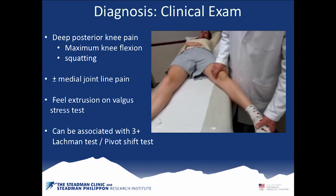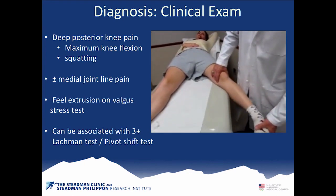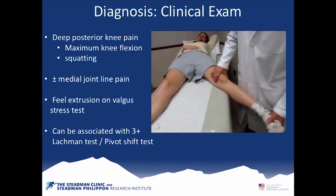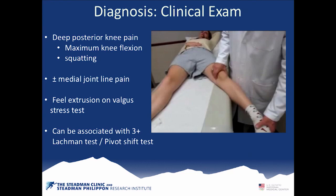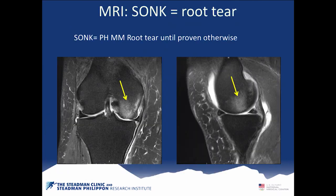Diagnosing root tears on clinical exam is really difficult because they don't often hurt as much as regular meniscus tears. You have to have them stand up and do a deep squat where they'll have maximal pain with flexion. Sometimes you'll see a 3-plus Lachman test or a pivot shift test. On MRI, the ghost sign — a lack of meniscal tissue in sequential sagittal images — is pretty classic for a root tear. We also see meniscal extrusion, which we published on in systematic reviews. When you see this it's because the root tear is causing the meniscus to extrude, ultimately leading to overload of the compartment.